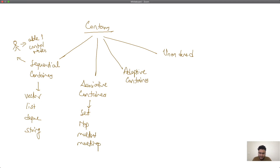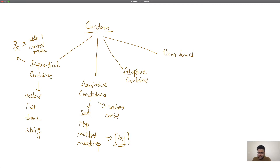In associative containers, the container controls the position of elements. This means all elements have a key and value — all values inside the associative container are handled via the key. We can only get values through the key, so the container controls the value and cannot be dereferenced directly; we need to iterate through the container. Next come adaptive containers — these are containers actually built on top of other containers, more like wrappers. Stack, queue, and priority_queue are examples of adaptive containers.